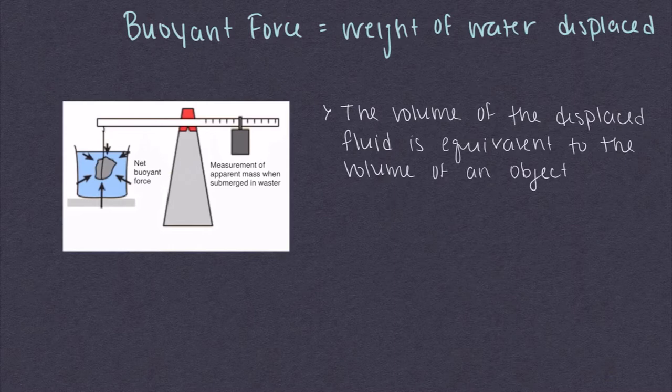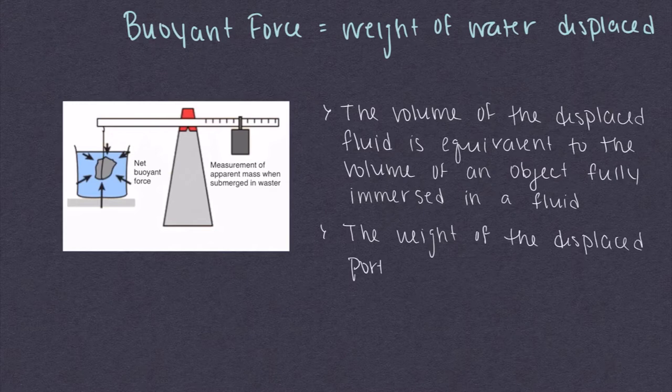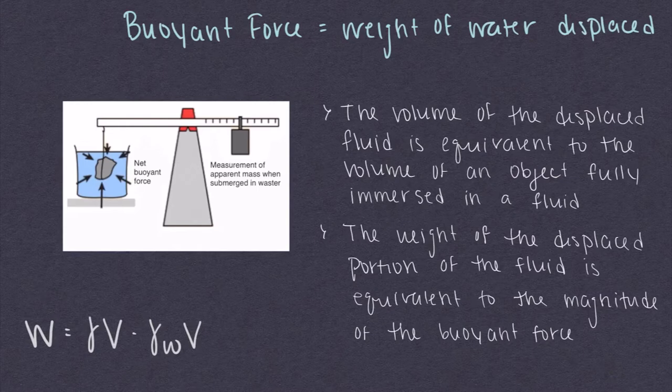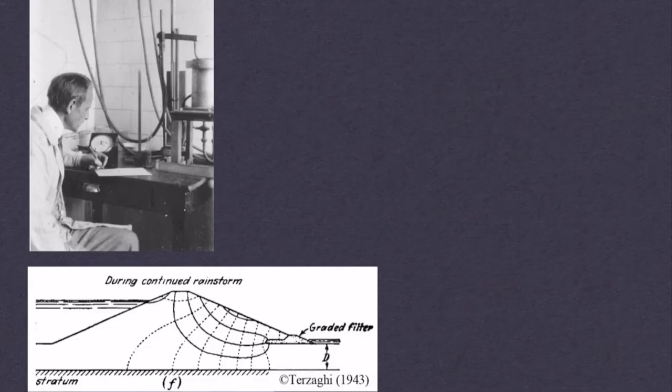This means that the volume of the displaced fluid is equal to the volume of the object fully immersed within the fluid, and the weight of the displaced portion is equal to the magnitude of the buoyant force. This can be equated with the equivalent volume of both the object and displaced fluid, as well as the specific weights of both the object and the fluid, in this case water.